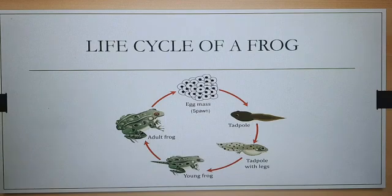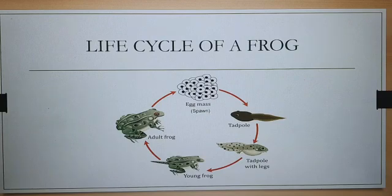After some more time, the tail disappears and a young frog grows into an adult one. This process of transformation of a young one into an adult that looks completely different is called metamorphosis.